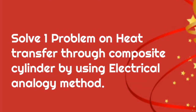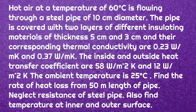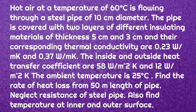We will solve one problem on heat transfer through a composite cylinder using the electrical analogy method. Hot air at 60°C flows through a steel pipe of 10 cm diameter. The pipe is covered with two insulating layers of thickness 5 cm and 3 cm, with thermal conductivities 0.23 W/m·K and 0.37 W/m·K. Inside and outside heat transfer coefficients are 58 W/m²·K and 12 W/m²·K. Ambient temperature is 25°C. Find the rate of heat loss from 50 m of pipe (neglect steel pipe resistance) and the temperatures at the inner and outer surfaces.